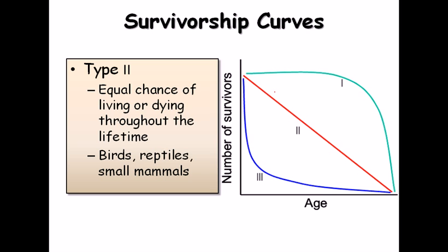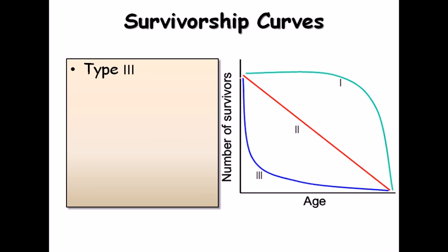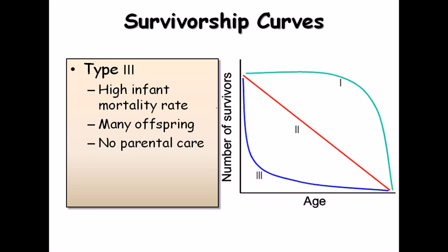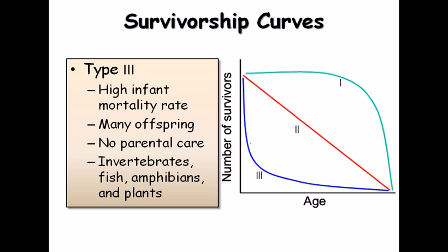The Type 3 survivorship curve is the opposite of Type 1. These organisms produce a large number of offspring, but the offspring start dying at a very young age — high infant mortality. As age increases, the survivors achieve stability, but infants die very fast. There is no parental care. Examples are invertebrates, fish, amphibians like frogs, and plants.